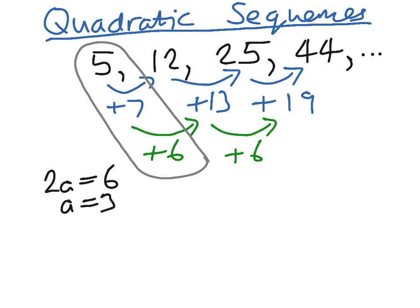We then have that 3a plus b equals 7, which is the first difference. We already know that a equals 3, so that means 9 plus b equals 7. So b must be negative 2, because 9 take 2 is 7.